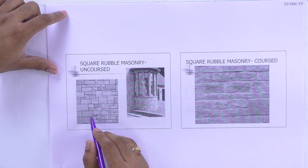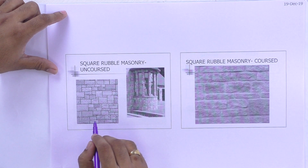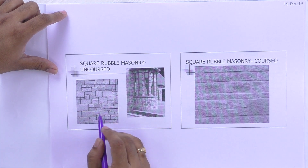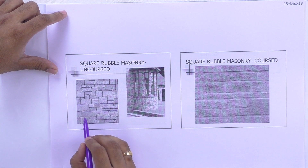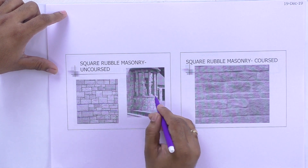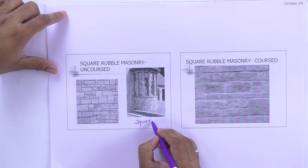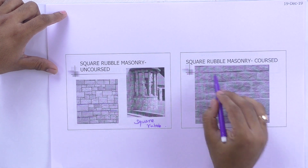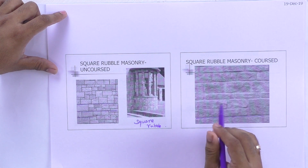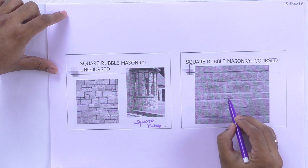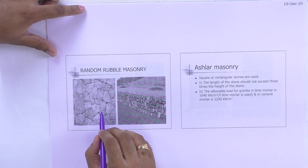Some examples of rubble masonry: squared rubble masonry uses different types of squared or rectangular stones in wall construction where the dimension of each stone is different. You can see examples of buildings using square rubble masonry both uncoursed and coursed, and another example using random rubble masonry with stones of different shapes and sizes.